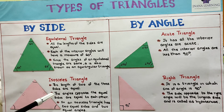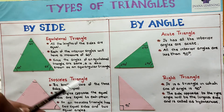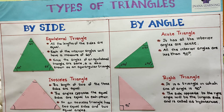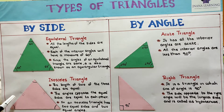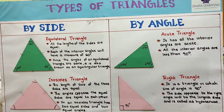The second one is isosceles triangle. In an isosceles triangle, the length of two of the three sides are equal — that is, two sides will be equal. The angles opposite the equal sides are equal to each other. So if these two sides are equal, the angles opposite to these two sides will be equal. An isosceles triangle has two equal sides and two equal angles.